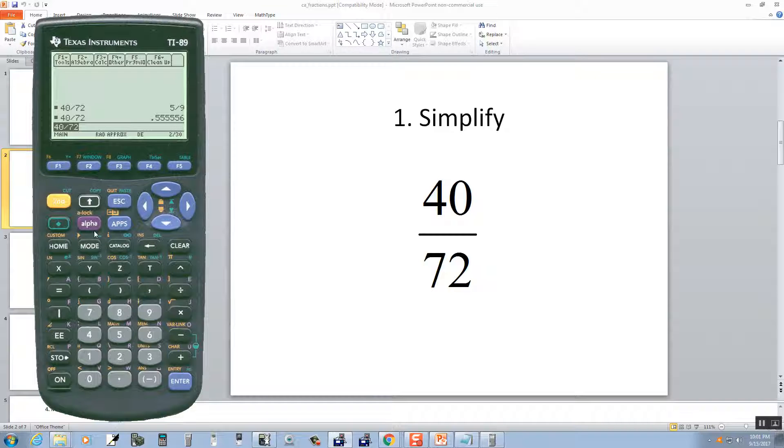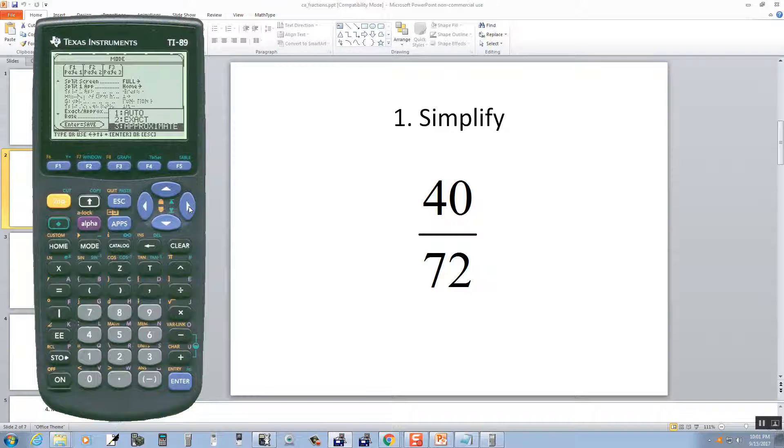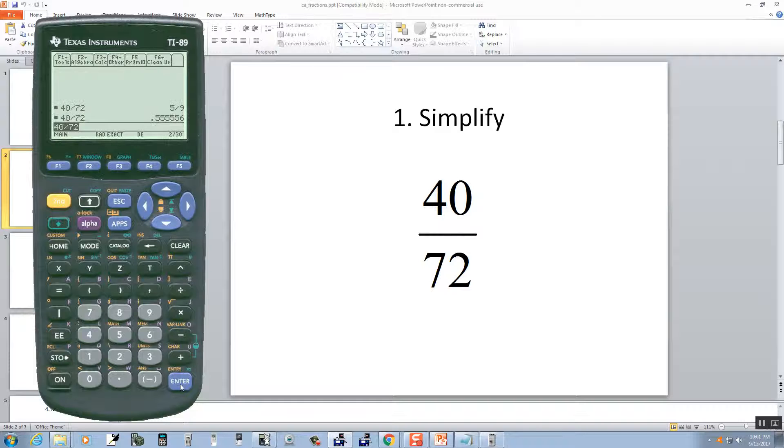So in order to get it to reduce your fraction, you have to go into your mode. I'm going to push F2 to go to page 2. And then I come down to exact/approximate, right arrow, and then up arrow, and I want to choose exact. So I did enter on it. Now I'll do enter to save.